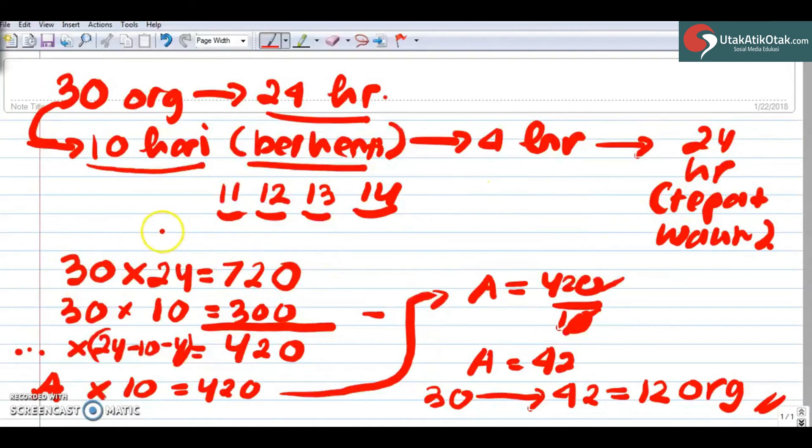30 kali 24 aja, 720. 30 kali 10, ini kan selesaikan dalam 10 hari, 300, sehingga dikurang. Ada sisa di dalamnya 420. Padahal sudah kerja yang harus, yang sisanya 24 dikurangi 10 dikurangi 4. Kita ada waktu 10 hari. Sehingga untuk mencapai 10 hari tersebut kita butuh orang 42 orang. Kalau sudah 42 orang, maka berapa orang yang tambahan pekerja yang dibolehkan adalah 12 orang.